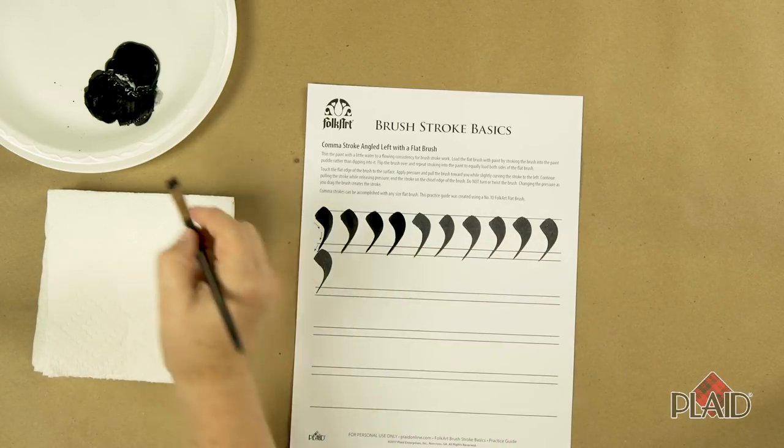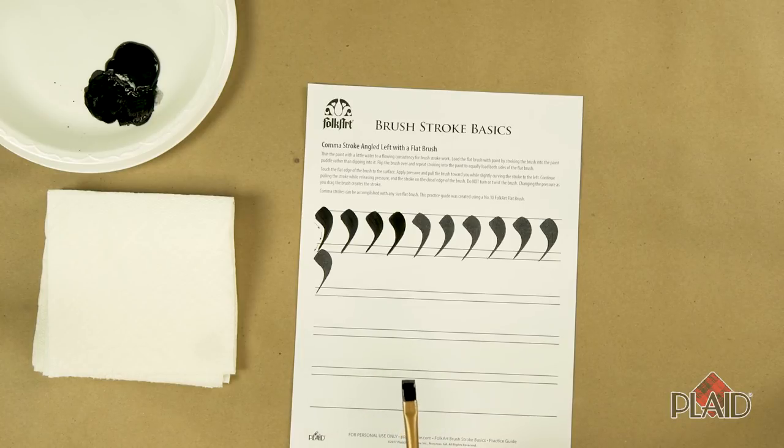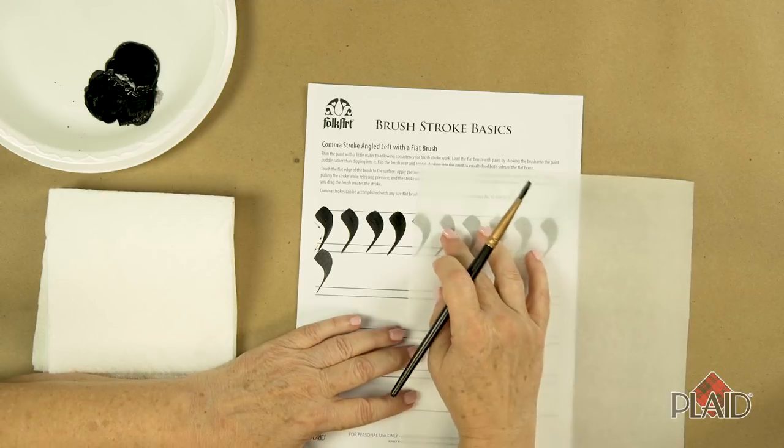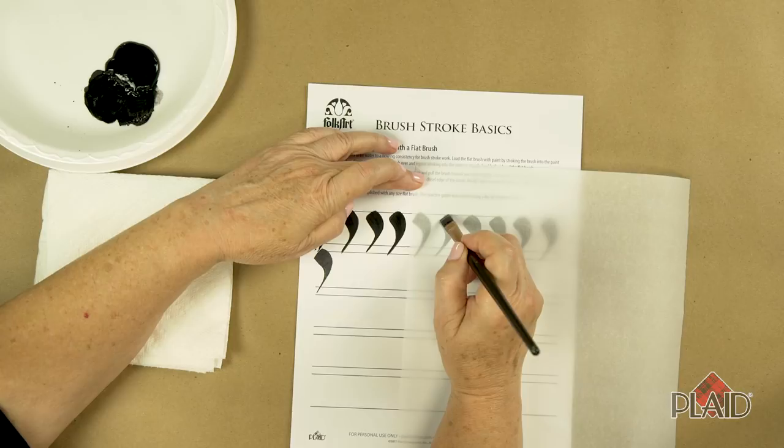If you choose not to practice your strokes directly on the printed paper, you can use a sheet of parchment paper or artist tracing paper. Lay that over the practice guide and use that as a way to practice.